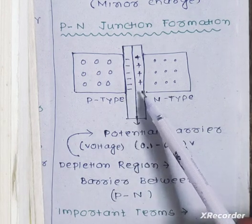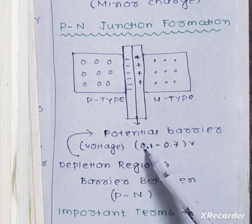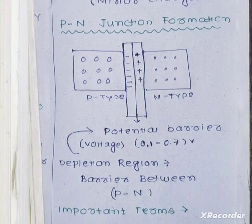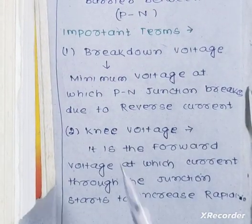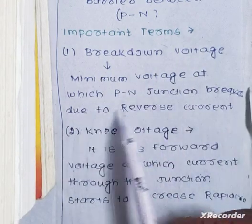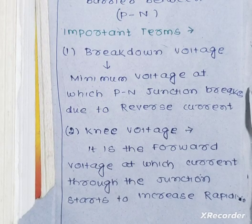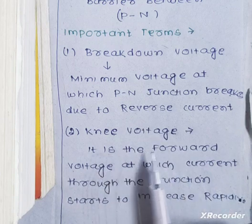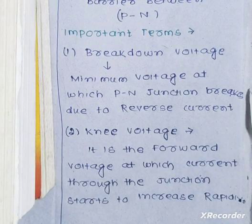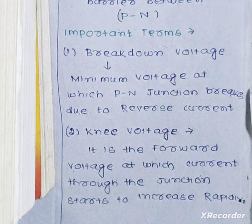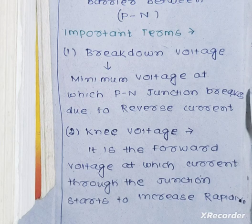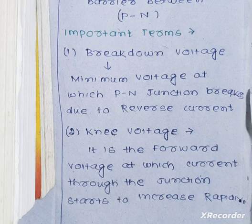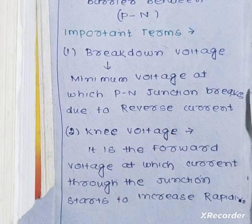The potential barrier across the depletion region is 0.1 to 0.7 volts. Breakdown voltage is the minimum voltage at which the PN junction breaks down due to reverse current. Knee voltage is the forward voltage at which the current through the junction starts to increase rapidly.